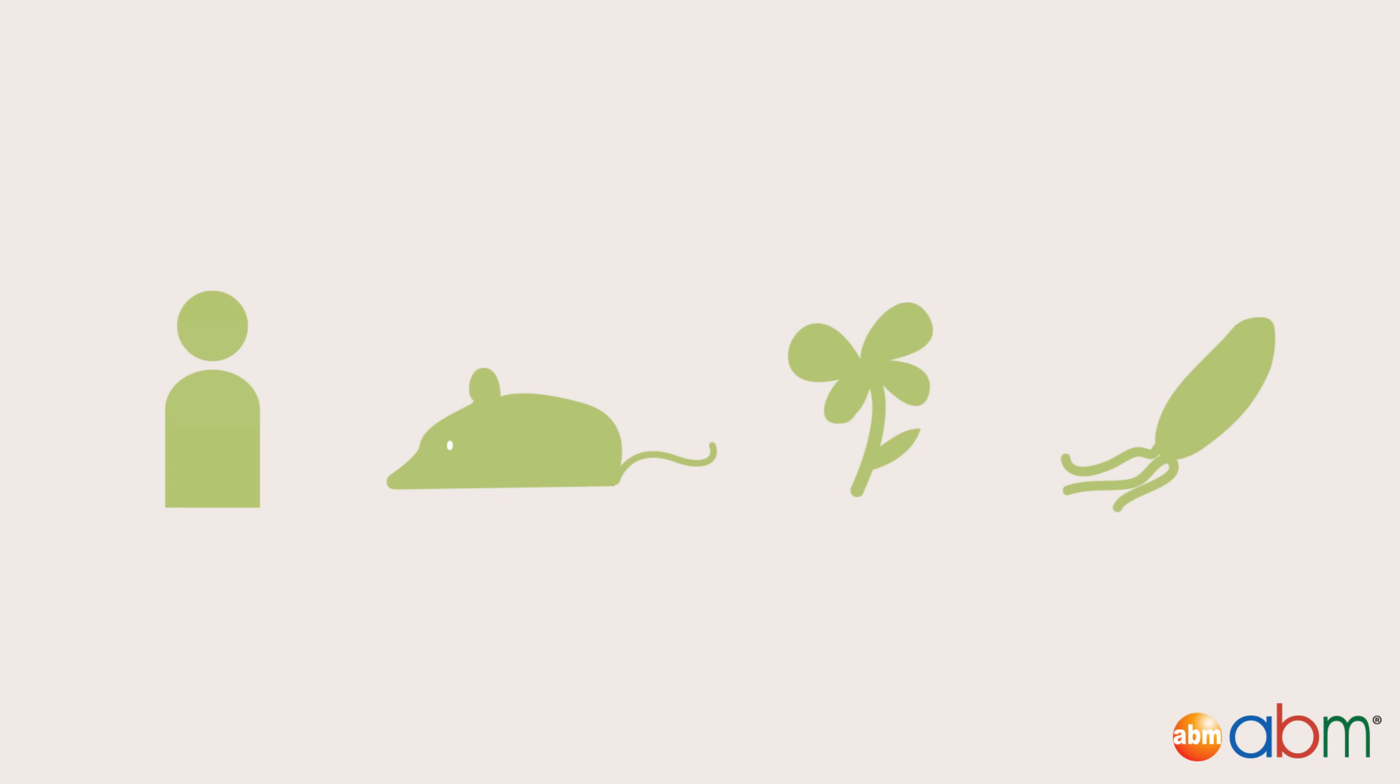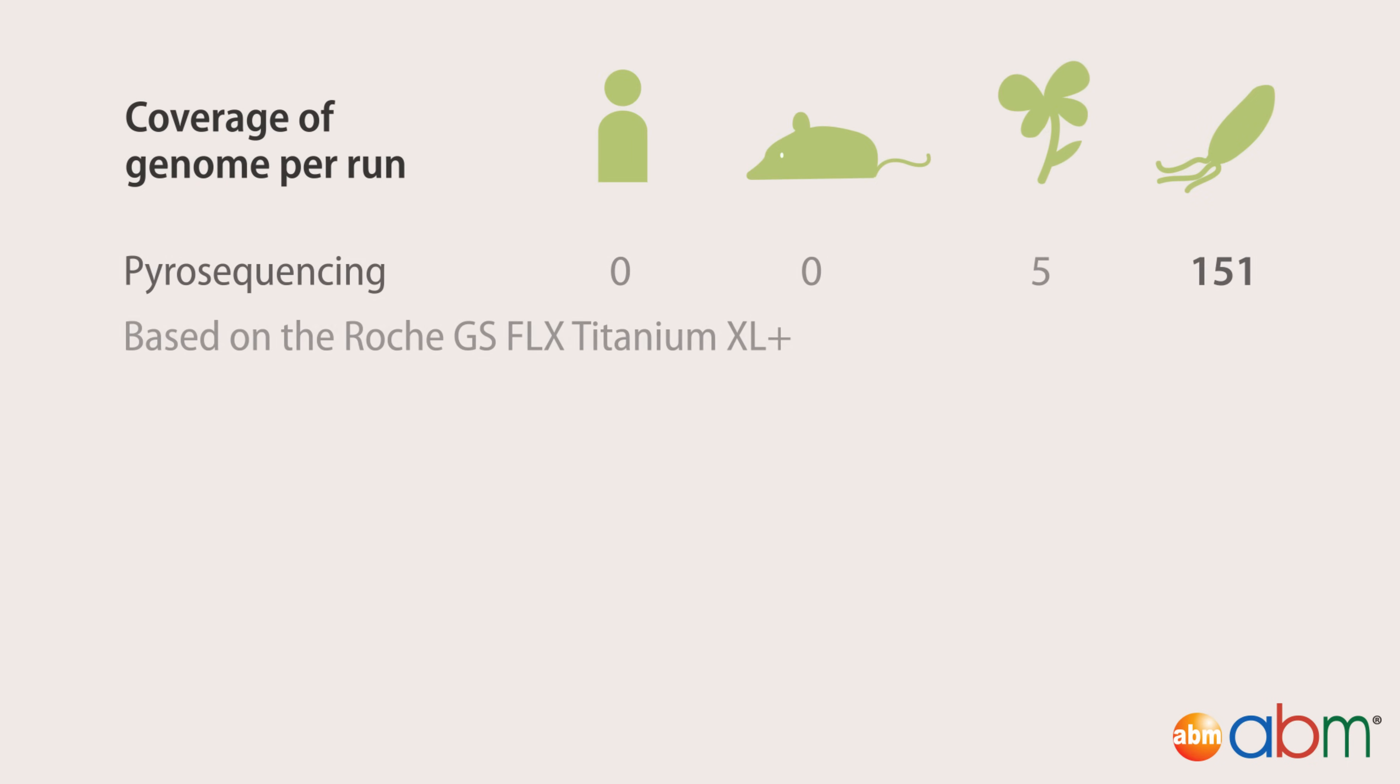For whole genome sequencing data to be useful, a minimum of 30 times coverage is required. As it can be seen, the pyrosequencing method is only able to sequence the E. coli genome at enough coverage to result in valid data.